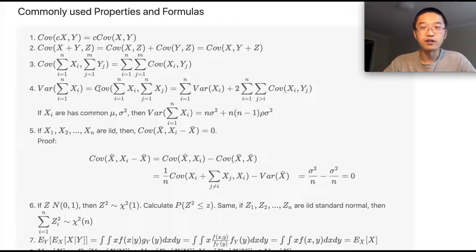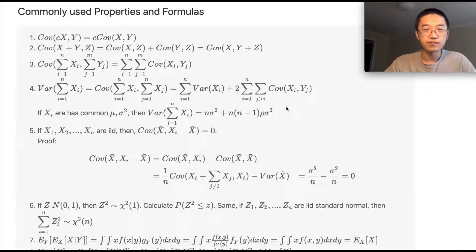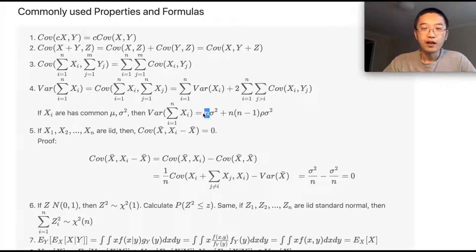The variance of the sum of X_i equals the sum of variances plus the sum of covariances. In the special case where X_i have a common mean and variance, the variance of the sum is n times the variance plus n(n−1) times the covariance.